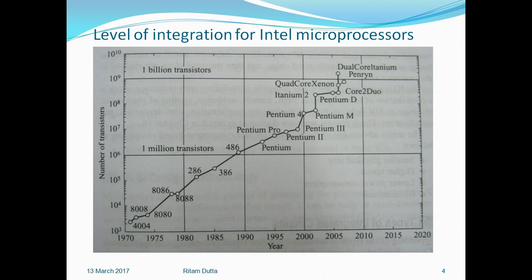Moore's Law started with the invention of basic microprocessors, then followed through the 8085 to 8086, followed by Pentium processors, then dual core to Core 2 Duo, to Infinity processors or Infinity series — which are the real-world applications of VLSI design.